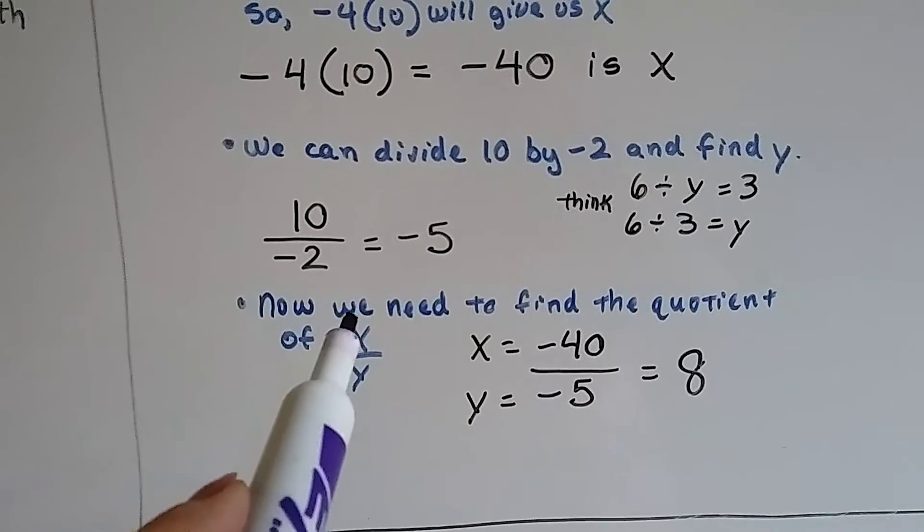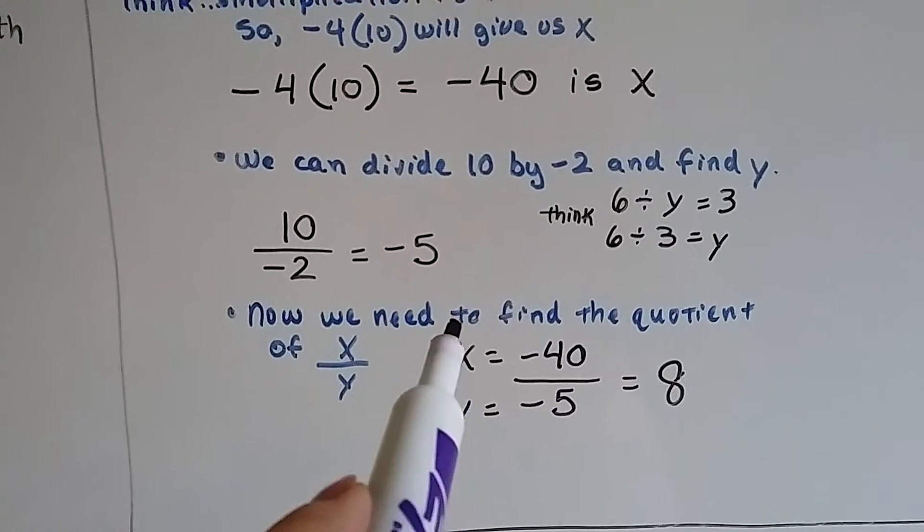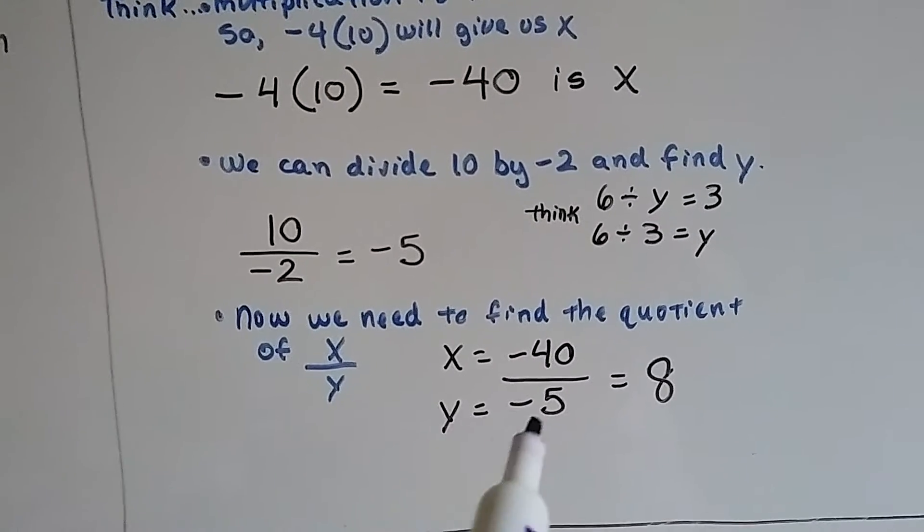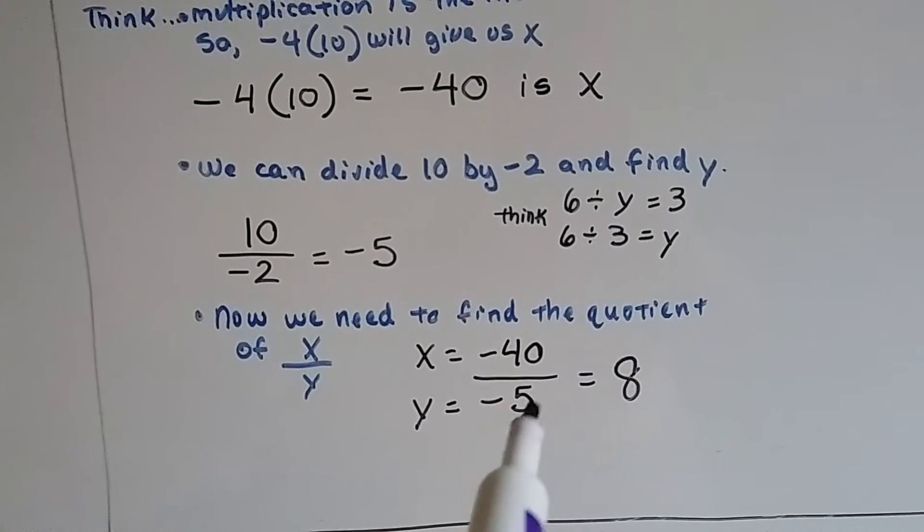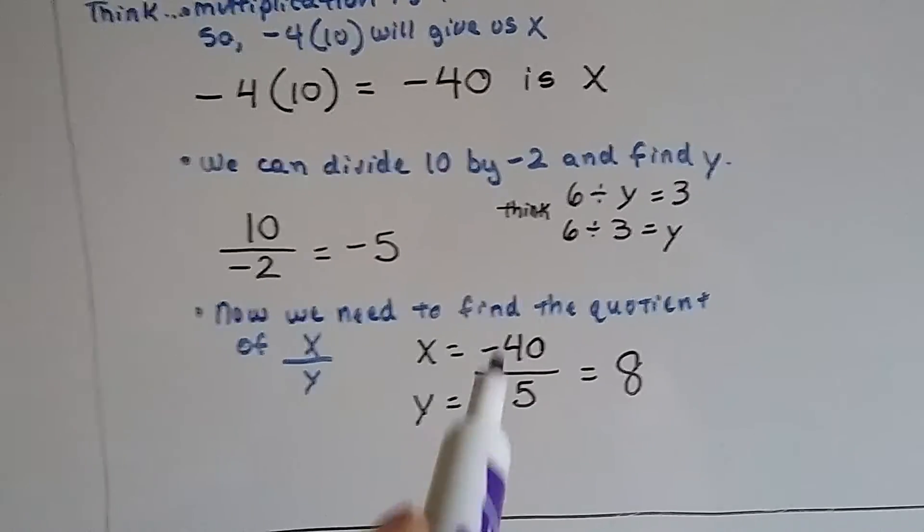Well, we still need to find that quotient. We need to have x divided by y. If x is negative 40 and y is negative 5, we divide negative 40 by negative 5, and 5 goes into 40 eight times. They're both like signs, our answer is a positive 8.